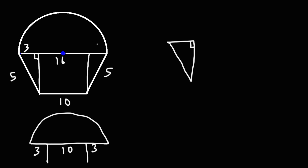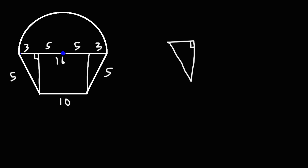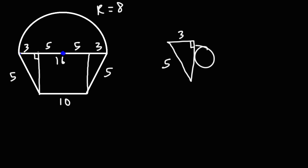So this part is 3 and this is 3. If this part is 8, that means this section is 5 and this is 5 — the radius is still 8, which is 5 plus 3. Focusing on this triangle: one leg is 3 and the hypotenuse is 5. This is going to be a 3-4-5 right triangle.